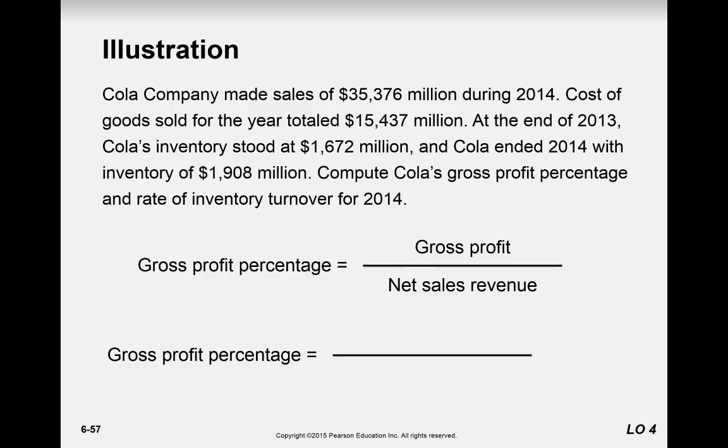Let's calculate these using Coca-Cola's data. With $35,376 million in sales, cost of goods sold totals $15,437 million. At the end of 2013, inventory was $1,600 million, and they ended 2014 with inventory of $1,908 million.